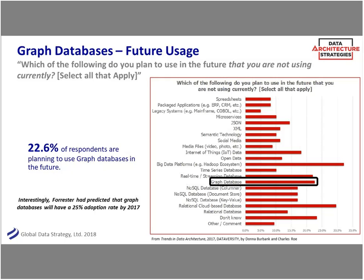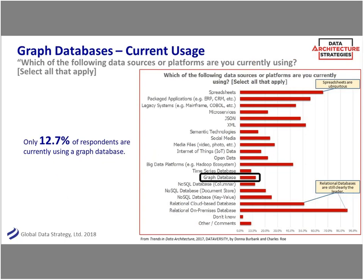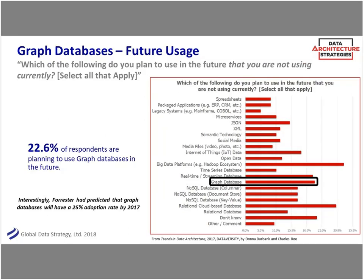Back several years ago, Forrester predicted that graph databases would have about a 25% adoption rate by 2017. According to our survey, they didn't quite get it - it was about 12.7%. But they're about right if you look at what people are actively planning to do. I find it interesting to see how close predictions were. Go Forrester - you weren't too far off.